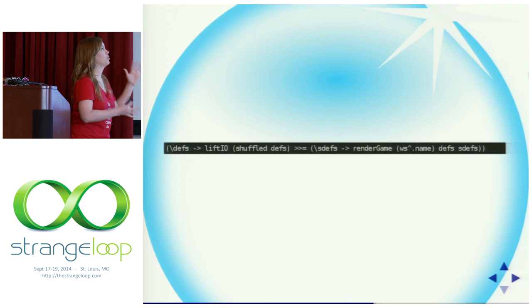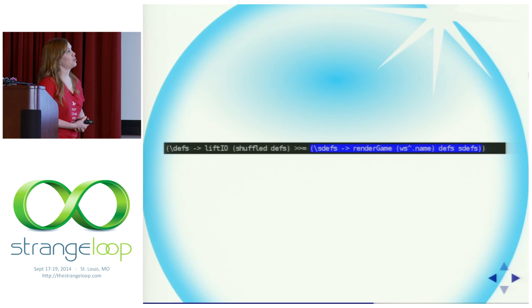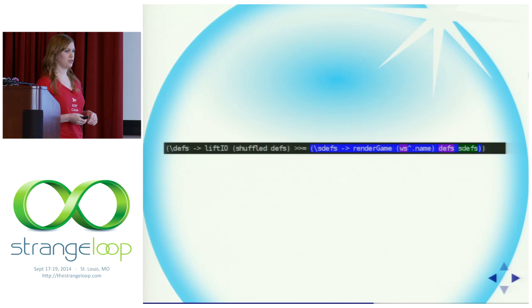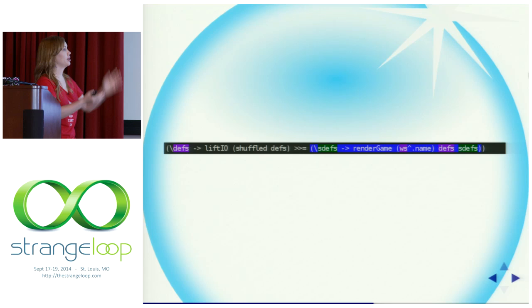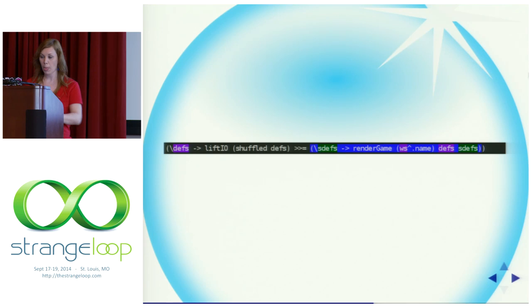Here's a different snippet from the app — to do with rendering the game. Notice we've got a lambda using three different variables: wsDefs, sDefs, and ws. One is passed into the lambda, one comes from a lambda in the surrounding scope, and ws comes from an even outer surrounding scope that isn't even visible in this snippet. Thanks to closures, rather than having to pass all these things through explicitly, we get a much more succinct way of writing things.